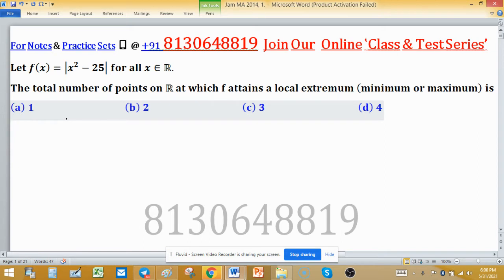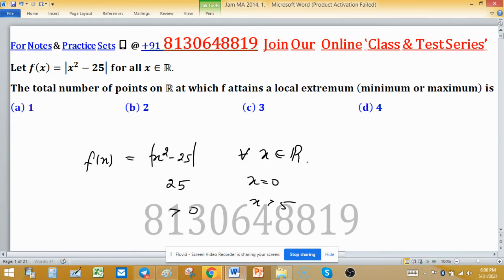As fx is given: fx equal to x square minus 25 within mod for all x belongs to real number. So if we put x equal to zero then we have 25. If x is greater than 5 then this quantity is positive. If x is less than 5 again this quantity is positive.